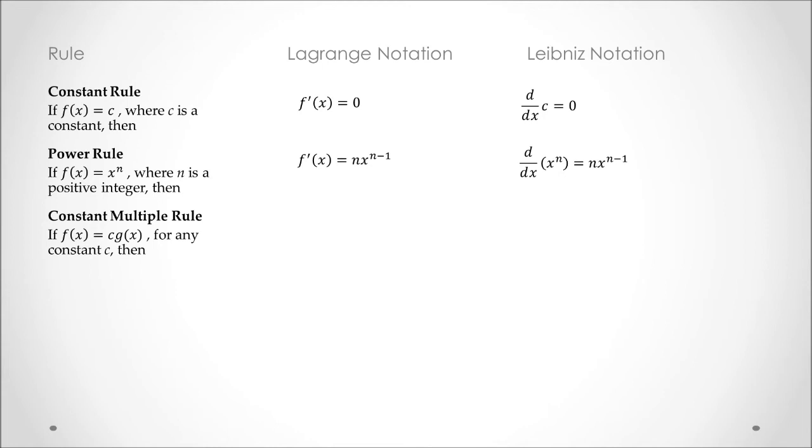Another rule is the constant multiple rule which states that for a function f of x which is constant times a function g of x, the derivative is that constant multiplied by the derivative of g of x. In other words c the constant is a factor and does not influence the derivative.